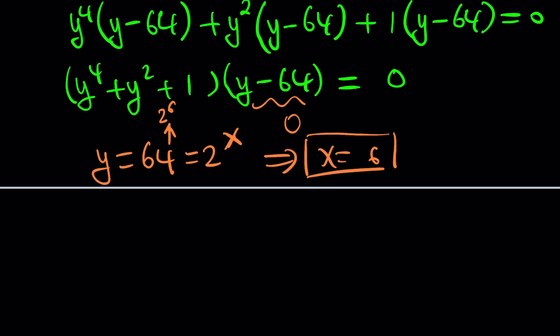What about the other one? Well, the other one isn't that easy. y^4 + y^2 + 1 equals 0. Houston, we have a problem, and that's a huge, very complex problem. Because if you try to solve this equation, let's say you set y^2 equal to z.